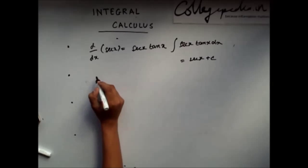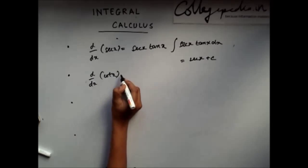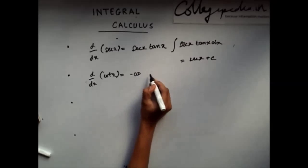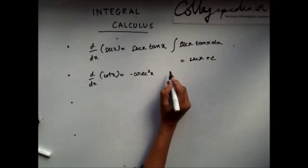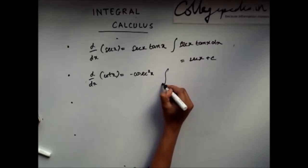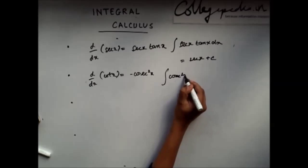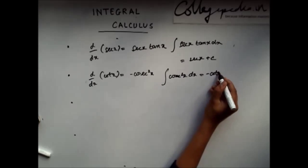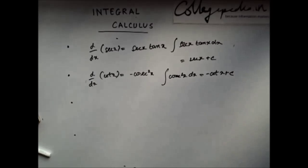Similarly, with cosec x: if I differentiate cot x, I will get minus cosec squared x. So, if I integrate cosec squared x, I will get minus cot x plus C.